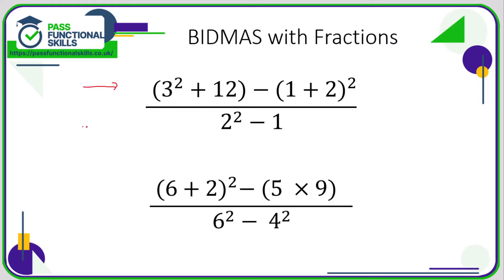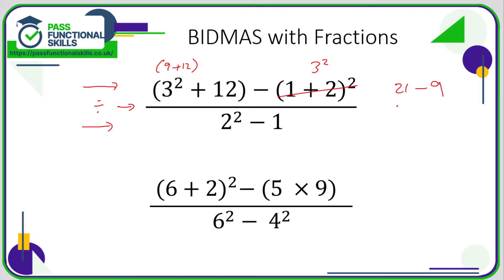When you've got a fraction, you need to work out everything on the top, then everything on the bottom, and then do the division — this line in a fraction does mean divide — or you can leave your answer as a fraction. Looking at the top line, we've got two sets of brackets. In the first bracket, there are indices and addition, so we do indices first: three squared is nine. Nine plus twelve is 21. In the second bracket, we do brackets before indices: one plus two is three, and three squared is nine.